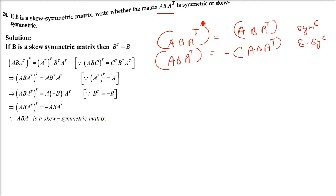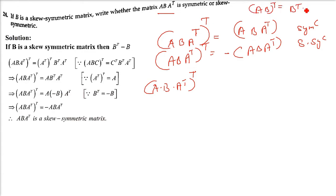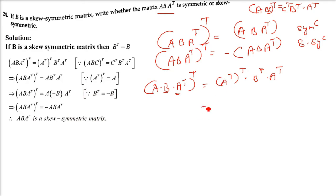Taking the transpose of A·B·Aᵀ and using (ABC)ᵀ = Cᵀ·Bᵀ·Aᵀ, we get (Aᵀ)ᵀ · Bᵀ · Aᵀ. Now (Aᵀ)ᵀ = A, and since B is skew-symmetric, Bᵀ = -B. So (ABAᵀ)ᵀ = A·(-B)·Aᵀ = -(ABAᵀ).